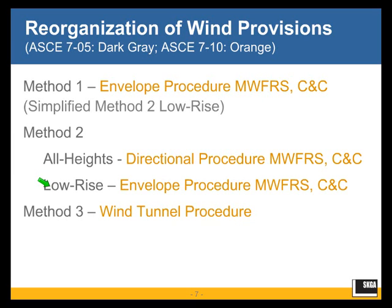So, main wind force resisting system and components and cladding — the main wind force resisting system derives its loading from components and cladding, and that is the basis of the distinction. For the reorganization, ASCE 7 has chosen to call the all heights method — the general analytical procedure of ASCE 7-05 — a directional procedure, because in this method the wind direction counts. Wind blowing from left to right will give you a different pressure diagram than wind blowing from right to left.